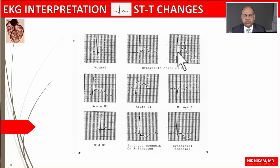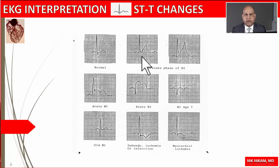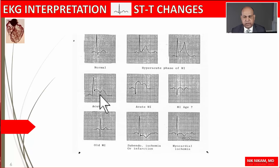If this had been a temporary coronary occlusion, as seen in patients with Prinzmetal angina or an episode of angina pectoris, these ST-T changes would revert back to normal with release of coronary spasm. However, if the occlusion is continuing, we see progressive changes of acute MI where the ST segments become coving upward with T wave inversion.